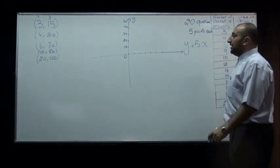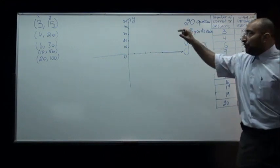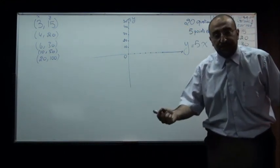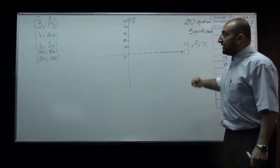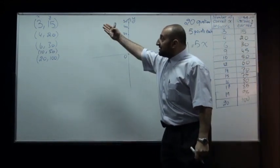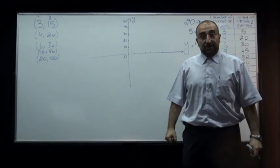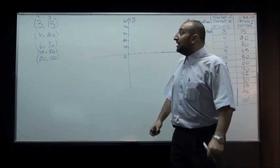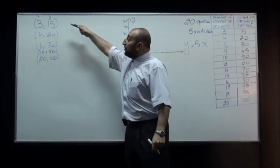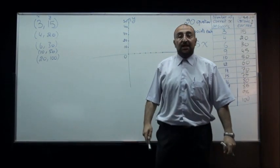Each ordered pair represents the address of a point on the Cartesian plane. So these are called the coordinates of a point. It's how I can locate the point located at 3 comma 15.